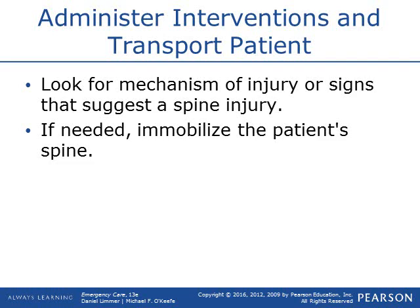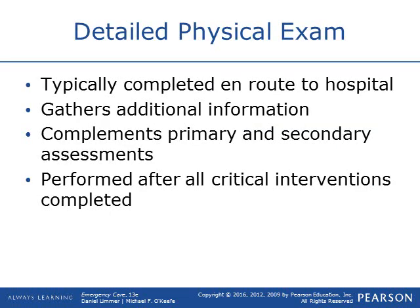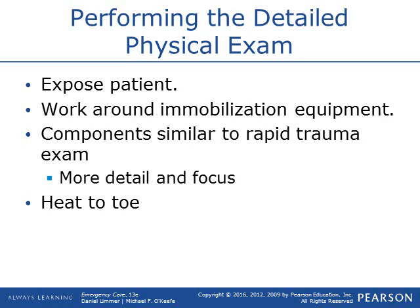Administer any life-saving interventions needed — immobilize, ventilate, whatever is needed to stabilize prior to transport. The detailed physical exam is generally done en route to the hospital, as a more thorough examination complementing the primary and secondary assessments — done after all critical interventions. Expose the patient fully — look for medication patches they may have forgotten to remove, such as an unintentional fentanyl overdose from stacked patches. It's a slower, more methodical process, like a rapid trauma assessment head to toe but more detailed.